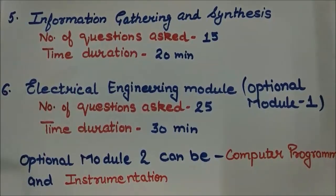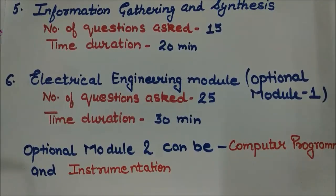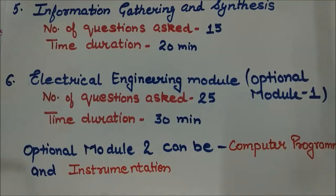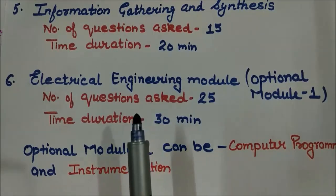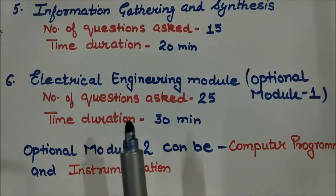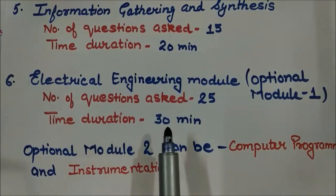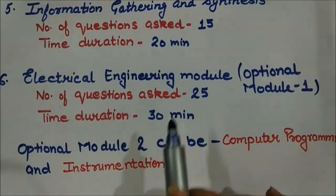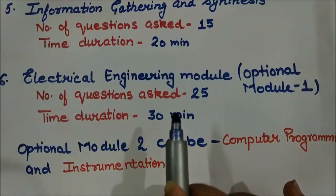The next compulsory module is Information Gathering and Synthesis, with 15 questions and a time allocation of 20 minutes. If you are from the electrical engineering branch, you have to choose this as Optional Module 1. People also choose Optional Module 2 as computer programming and instrumentation, but it is preferred to choose computer programming. The Electrical Engineering optional module has 25 questions with a time allocation of 30 minutes.